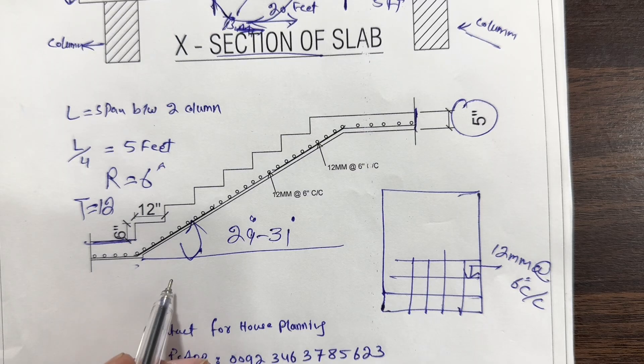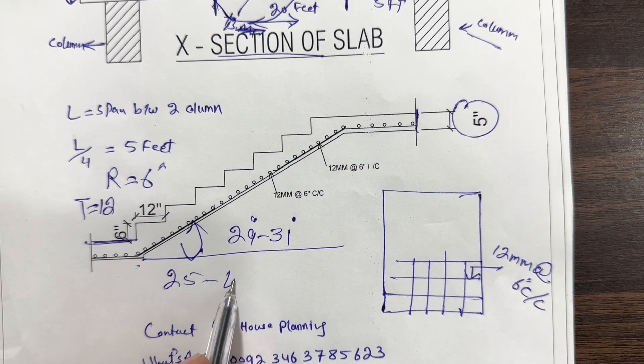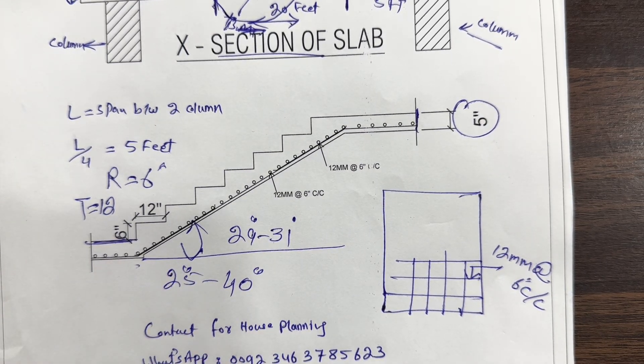But normally in the staircase you can keep from 25 to 40 degree for normal residential building.